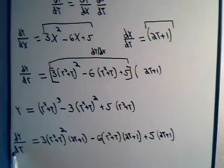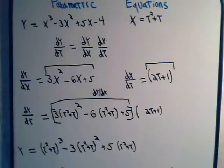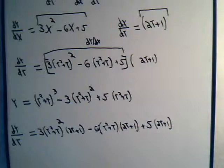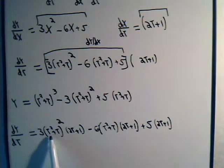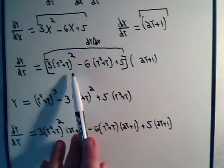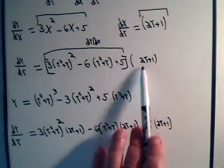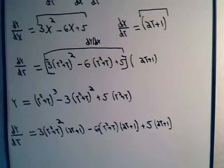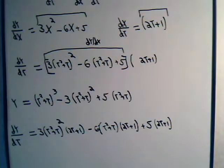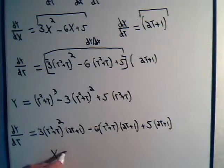That's our expression for dy/dt when we plugged in x directly and took the derivative. Now let's see if they're the same. Using the chain rule we have 3 times (t squared plus t) squared times (2t plus 1), minus 6 times (t squared plus t) times (2t plus 1), plus 5 times (2t plus 1). Yes, they match — this confirms that the chain rule holds true.